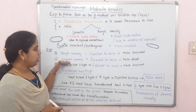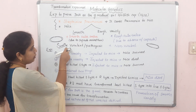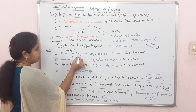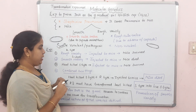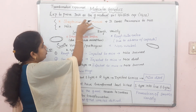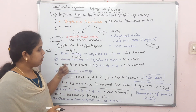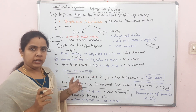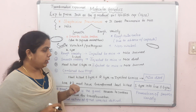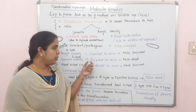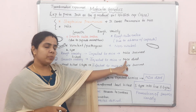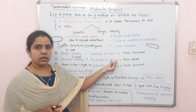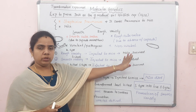In the second experiment, the S-type — smooth variety — of Streptococcus pneumoniae was injected into mice. This type is virulent and pathogenic, so it causes pneumonia. As a result, the mice died. So the first experiment showed mice survived with R-type, and the second experiment showed mice died with S-type.